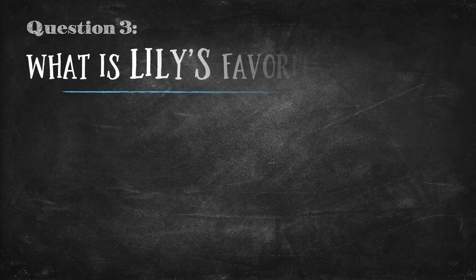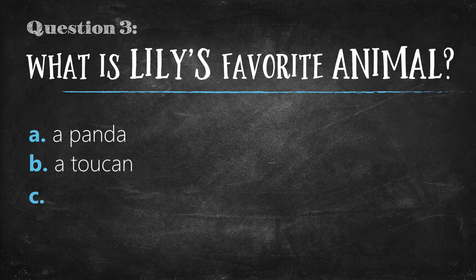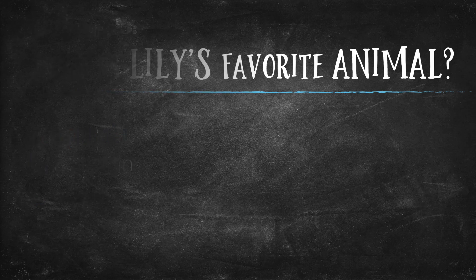Here is question 3: What is Lily's favourite animal? Is it a) a panda, b) a toucan, or c) a tiger? The answer is a panda. Lily's favourite animal is a panda. Well done.